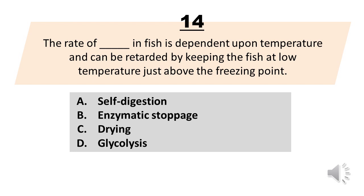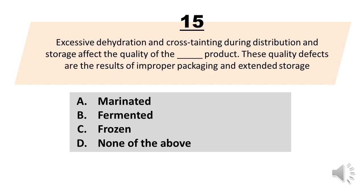The rate of blank in fish is dependent upon temperature and can be retarded by keeping the fish at low temperature just above the freezing point. A. Self-digestion. B. Enzymatic stoppage. C. Drying. D. Glycolysis. The correct answer is Letter A, Self-digestion.